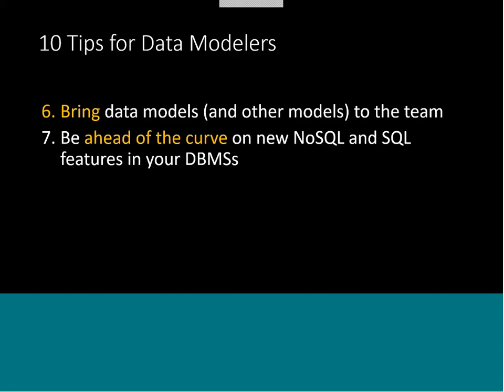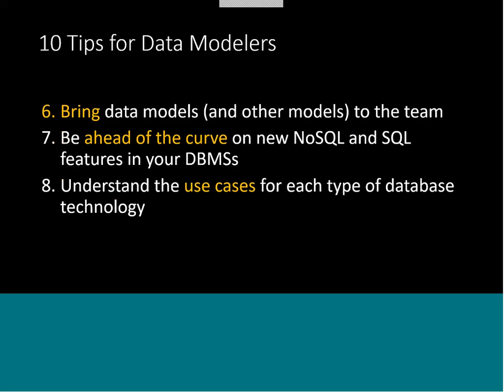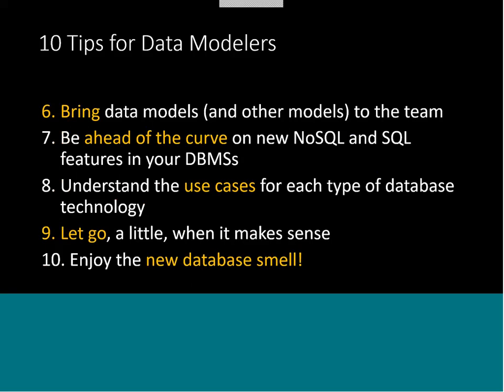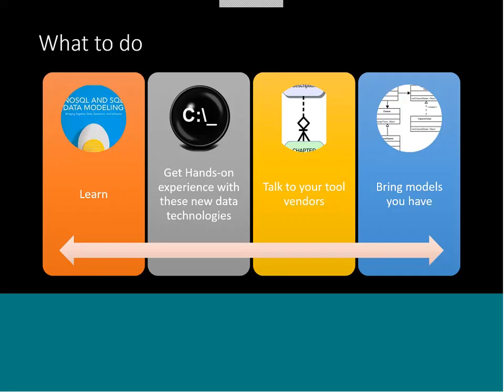We should still bring our data models even if they're relational. We need to get ahead of the curve on the new non-relational features in your current databases and understand the use cases — there are lots of good presentations out there on what the use cases are. And we need to be able to let go and think differently about data and data design, especially when it comes to consistency and constraints and even data quality, because there's a good business case for that. We should enjoy the new database smell. I'm so excited about new databases as a service and the new features coming in relational databases. So what you should do: learn, get hands-on, talk to your tool vendors, bring the data models you have, and we should be getting together to figure out what notations we need for these other structures.